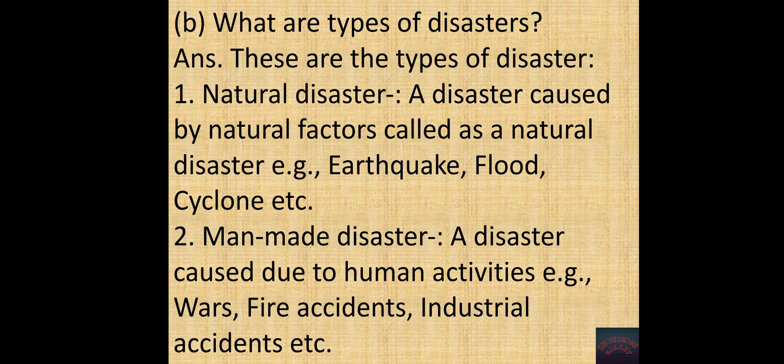B. What are types of disasters? Answer. These are types of disasters. First, natural disaster. Disaster caused by natural factors called as natural disaster. Example: earthquake, flood, cyclone, etc. Second, man-made disaster. A disaster caused due to human activities. Example: wars, fires, accidents, industrial accidents, etc.